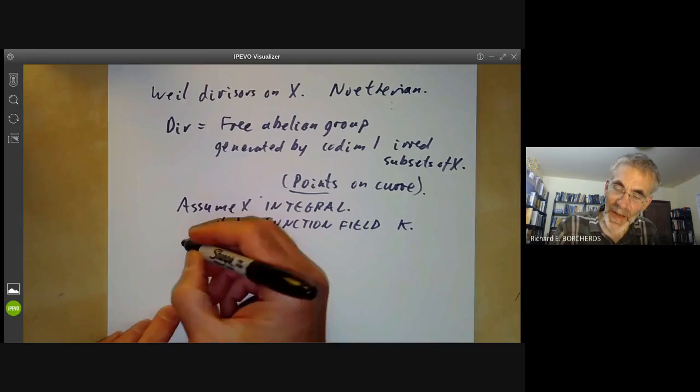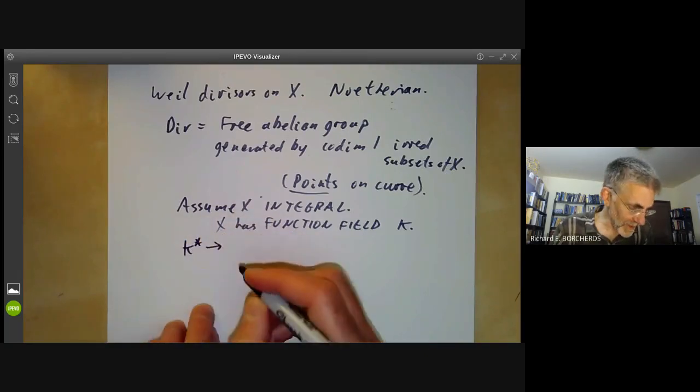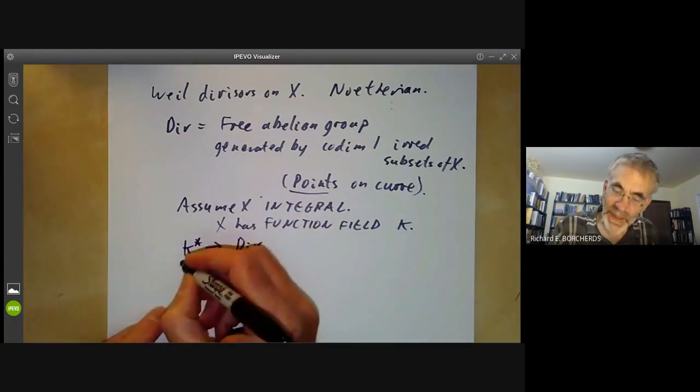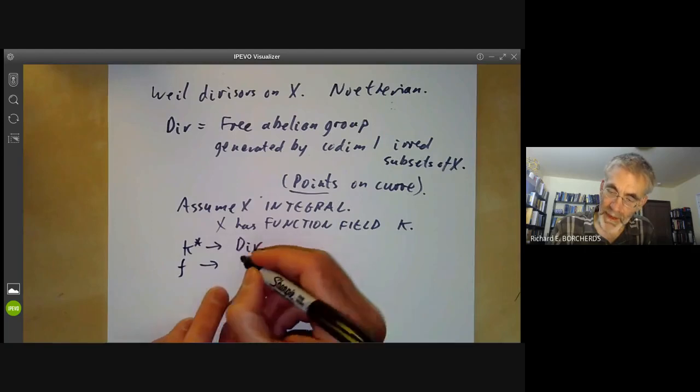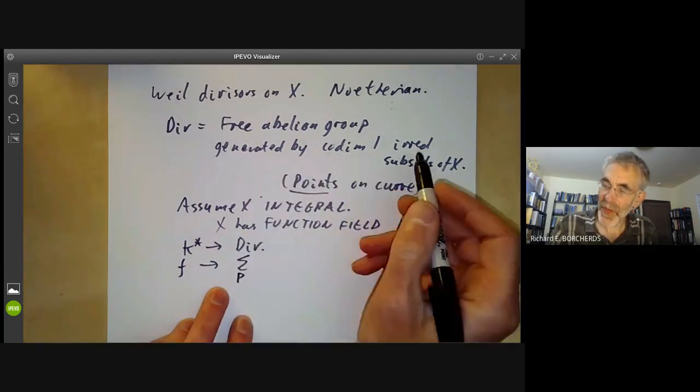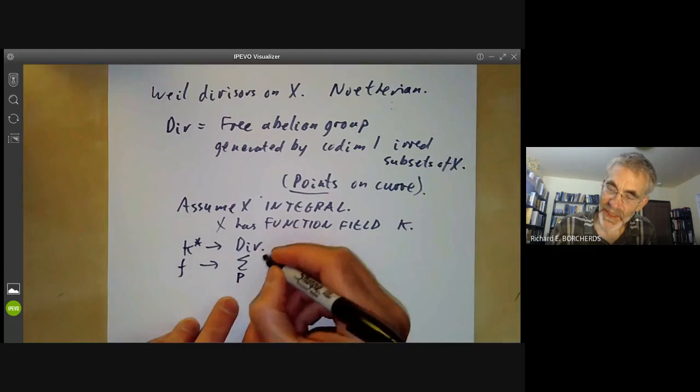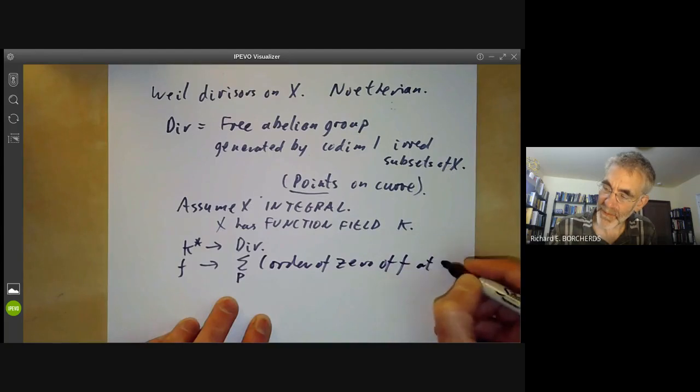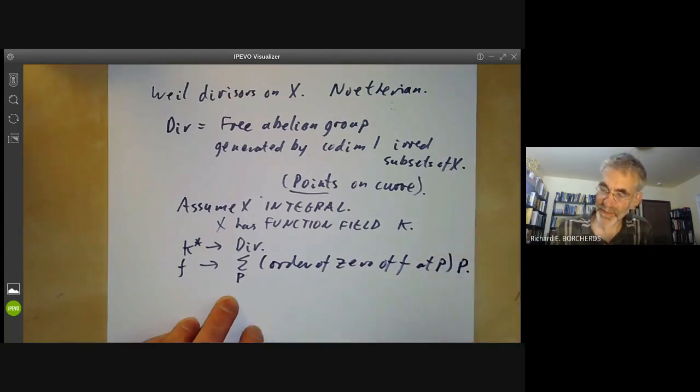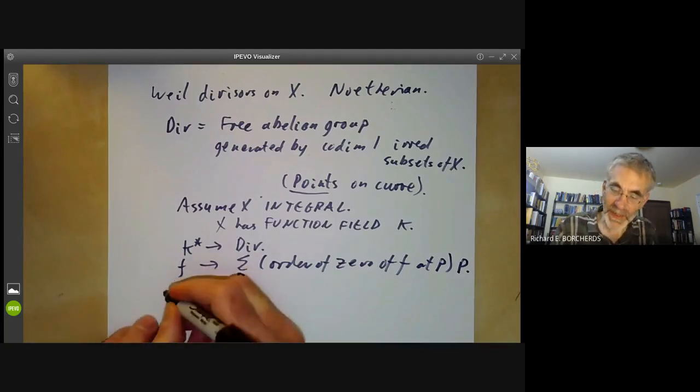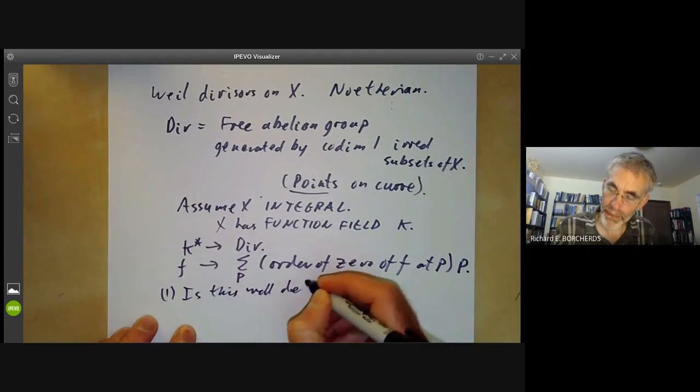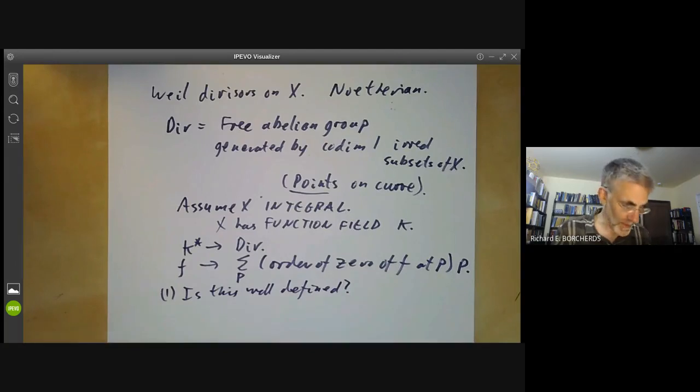And then we get a map from K star to the group of divisors. This takes a function F to the sum over all codimension one irreducible subsets of the order of zero of F at P times P. This is essentially what we did for curves. The problem is, is this well defined?